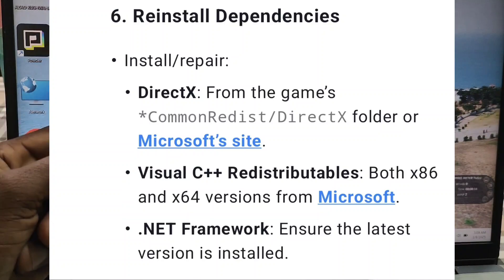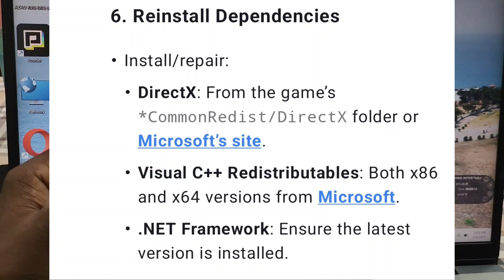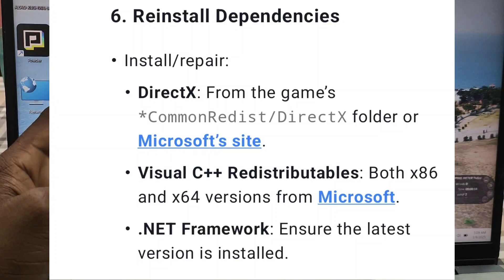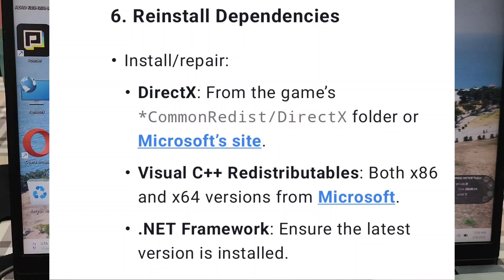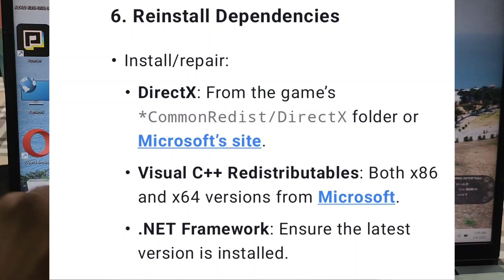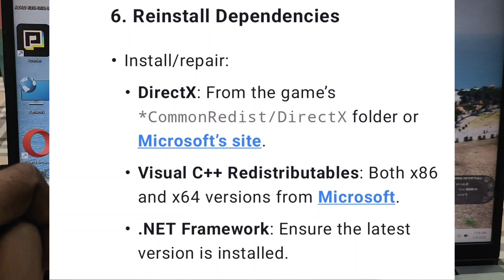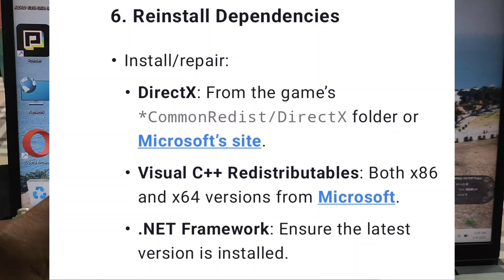Advanced fixes. Reset any CPU or GPU overclocks to default in BIOS or using tools like MSI Afterburner. Set your power plan to High Performance in Control Panel > Power Options. For a clean boot, use MSConfig to disable non-Microsoft startup services — search 'Clean Boot Windows 10/11' for guidance.